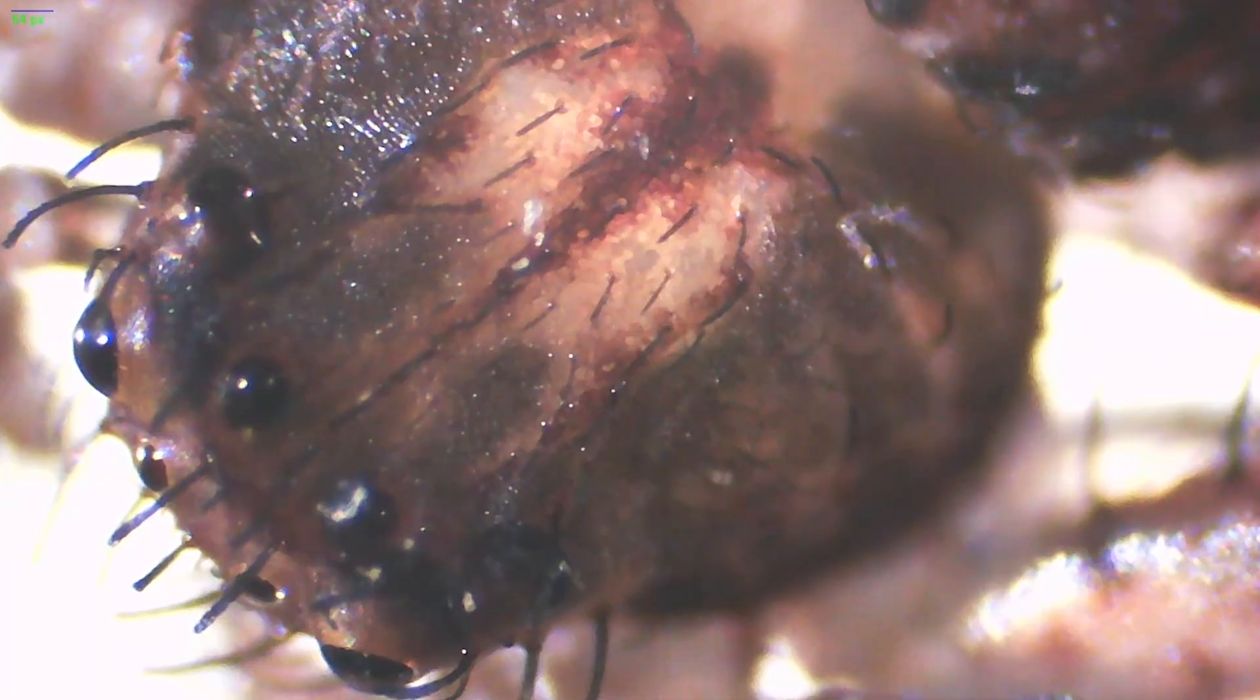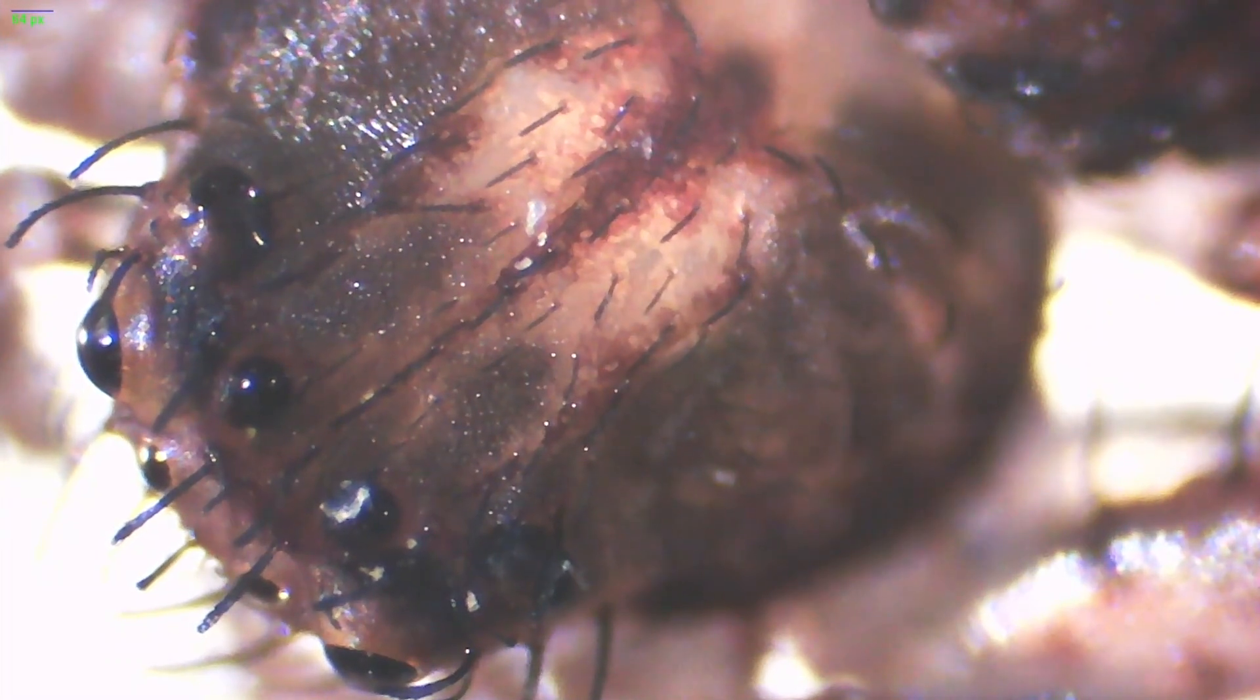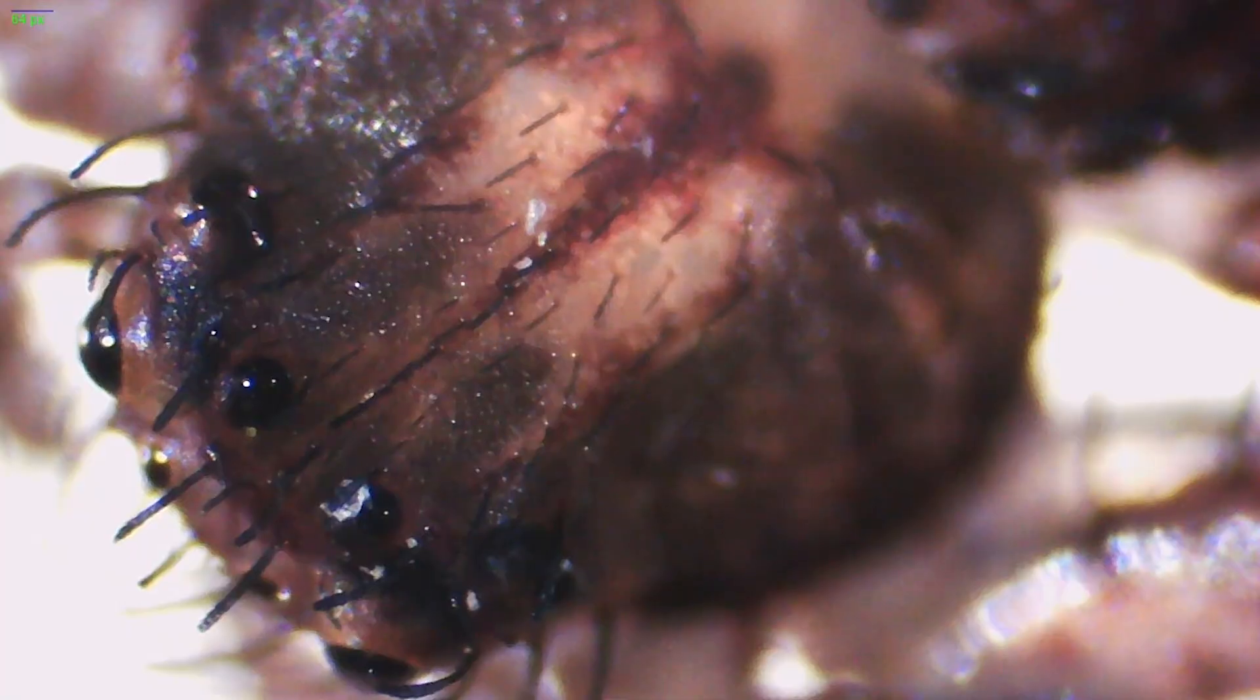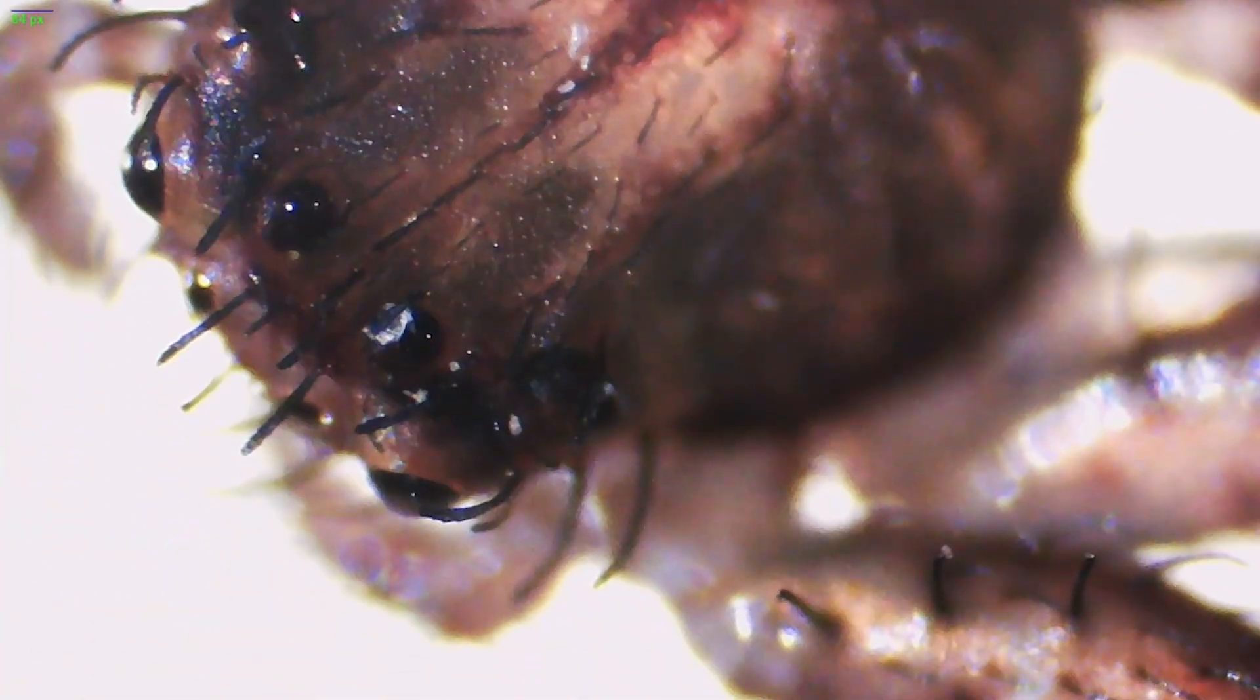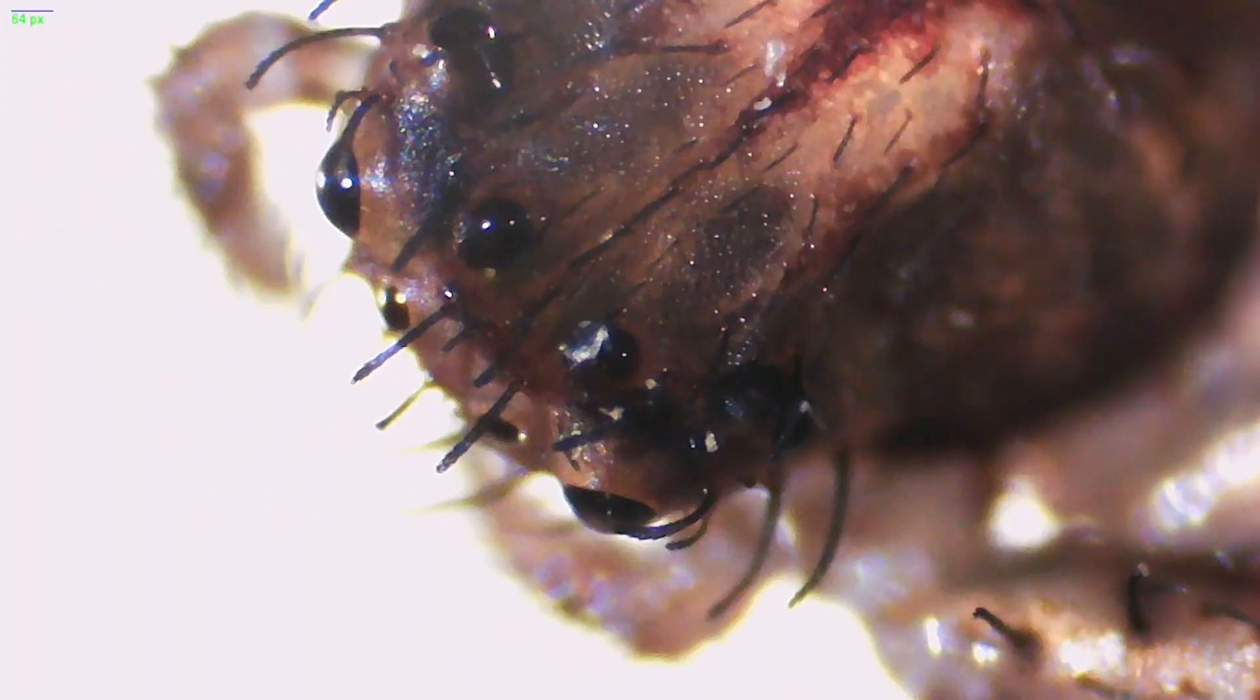It's so interesting on the eyes of spiders—they're always different or vary between the different species. Here we've got the eight eyes: one, two, three, four, four on the top, four on the bottom. On this guy, all the eyes are to the front of the face, a lot different than the jumping spider where you have eyes on the side of the head. Very fascinating.